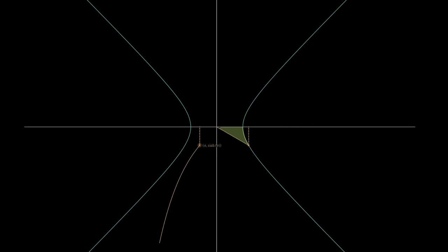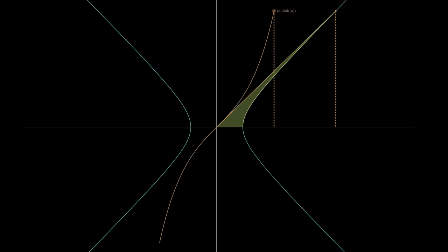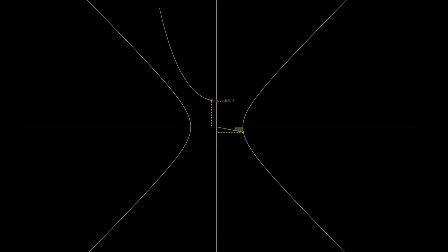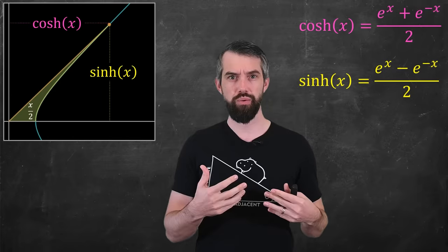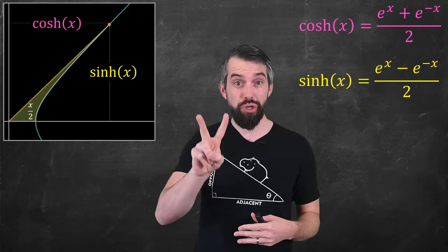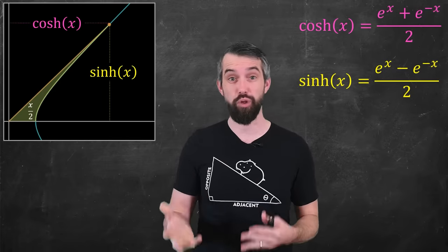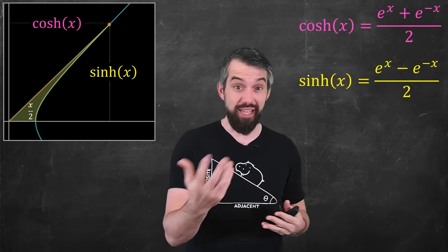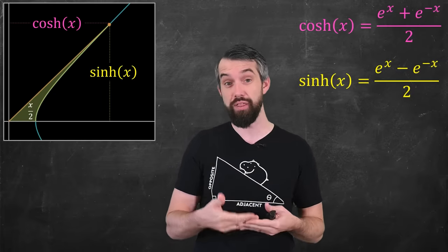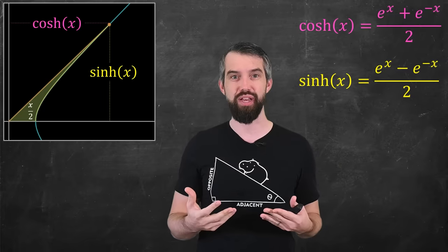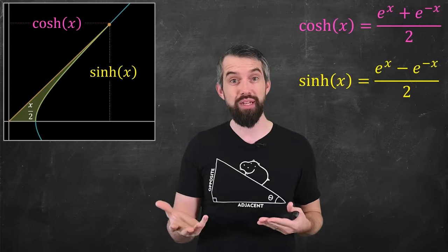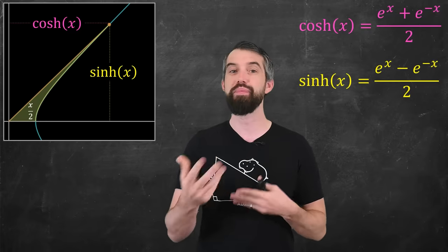With this geometric definition in mind, we can generate the same plots for hyperbolic functions that we saw before. For hyperbolic sine of A, the height of the function at any point is just the height of the points on the hyperbola. For hyperbolic cosine, the height of the function is the horizontal components of the points on the hyperbola. So I now have two different definitions floating around: the analytic definition as even and odd components of e to the x, and the geometric definition as components of the point on a hyperbola that has swept out a specific area.